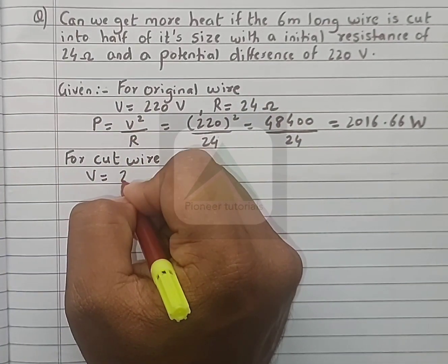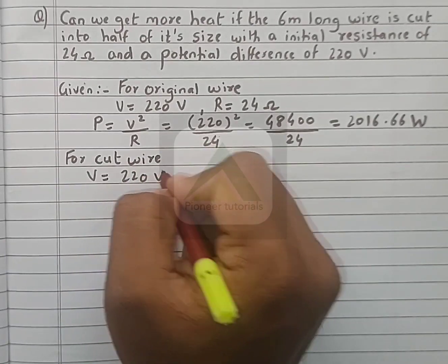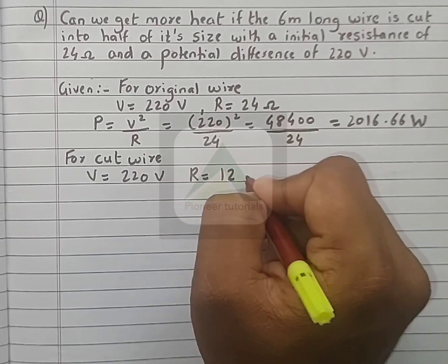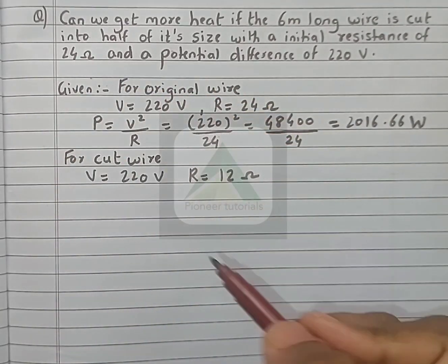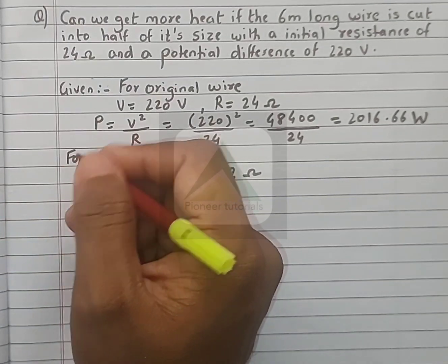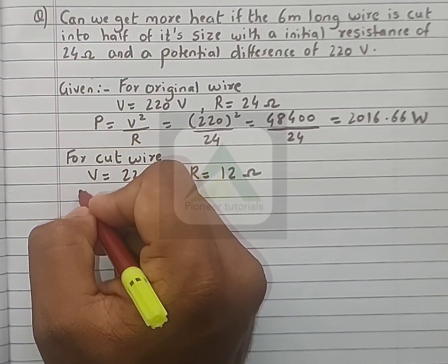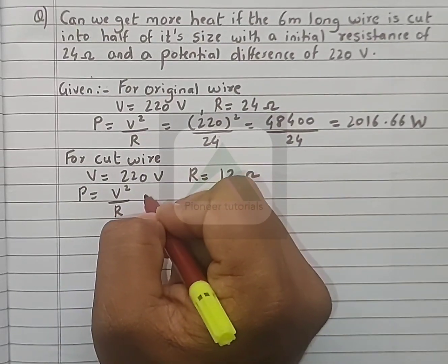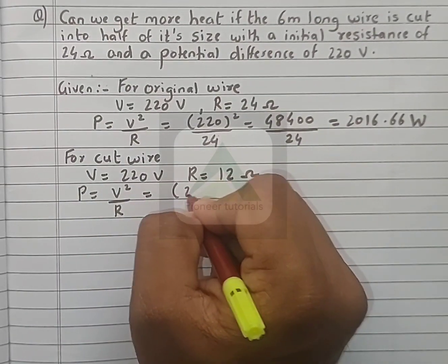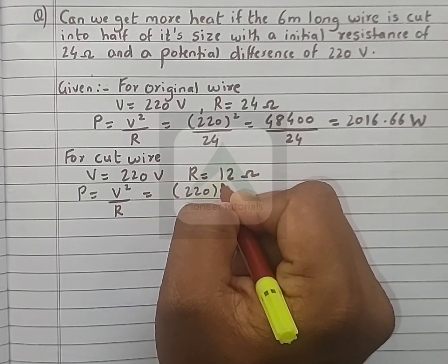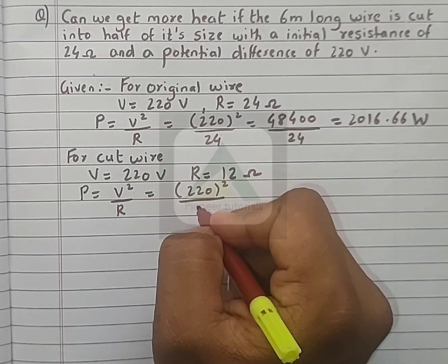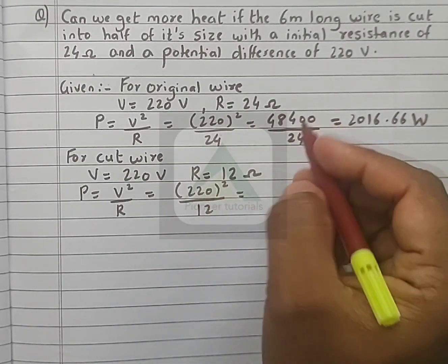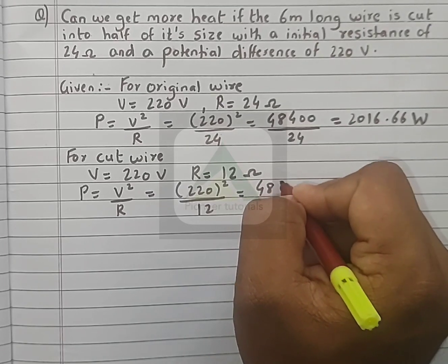So V = 220 volts, R = 12 ohms, because 24 divided by 2 is 12. The formula is the same: P = V²/R. So 220 squared upon R, R is 12, which is 48,400 upon 12.